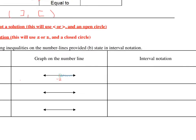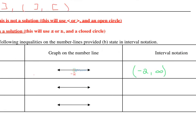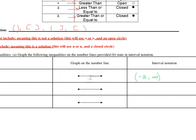To do interval notation, since you're starting at negative 2, you're going to put negative 2. But since it's not including negative 2 as your solution, we put a parenthesis. And it's going on forever to the right, so we do infinity. That means it basically goes on forever. Whenever you have an infinity, it's automatically a parenthesis.